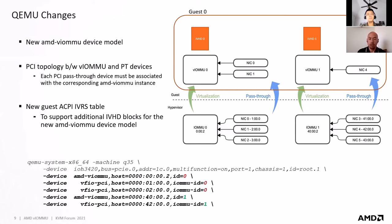We will introduce two VIOMMU instances in the guest — VIOMMU 0 and VIOMMU 1 — and specify the relationship using the QEMU command line, so that NIC 0 and NIC 1 tie to VIOMMU 0 and NIC 4 ties to VIOMMU 1. This information will be used by QEMU to generate the IVRS table that will be consumed by the guest kernel to set up the VIOMMU in the guest.